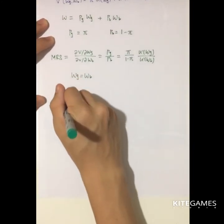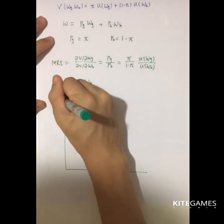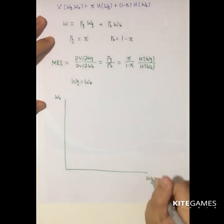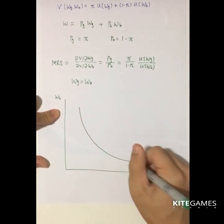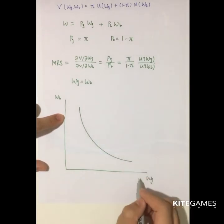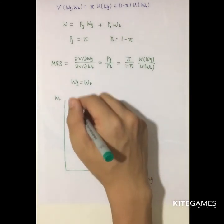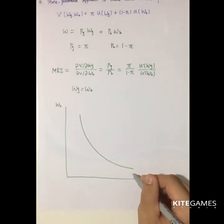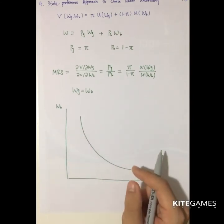So if you want to draw an indifference curve, so you have two states, WB and WG. So if the wealth in state bad is lower, you need to have higher wealth in G to compensate. So this is the indifference curve of the trading the wealth in good time or bad time.